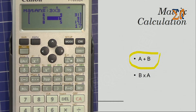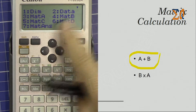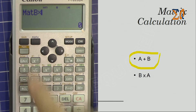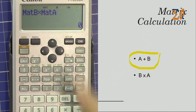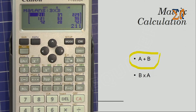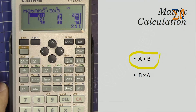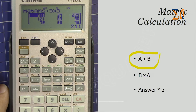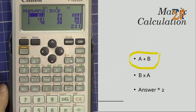To multiply matrix B by matrix A, press clear all, then Apps and number four for matrix B, press the multiplication sign, then Apps and number three for matrix A. Press equal to get the result of matrix B multiplied by matrix A.